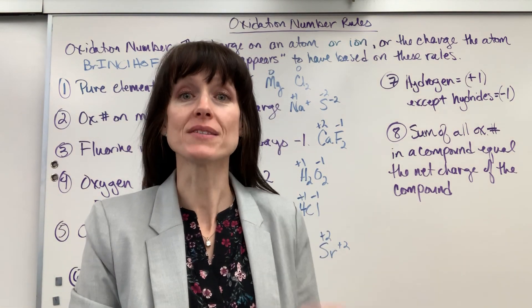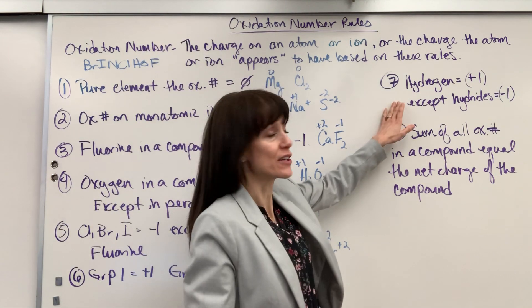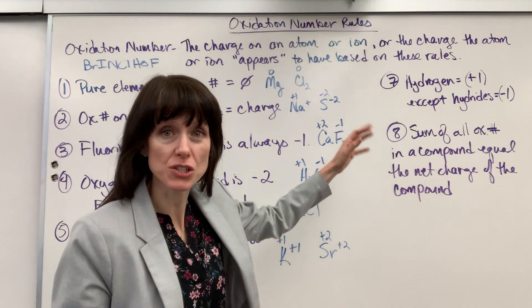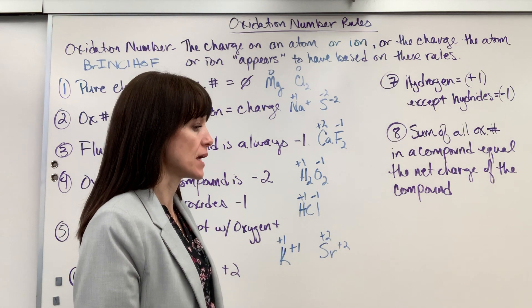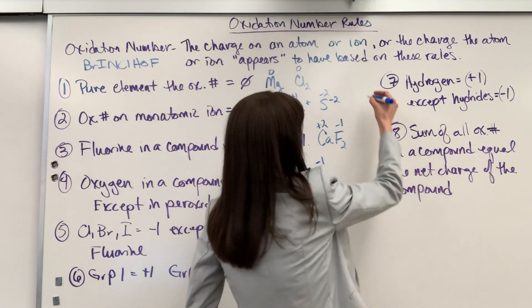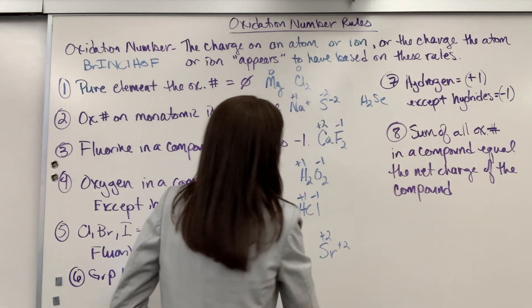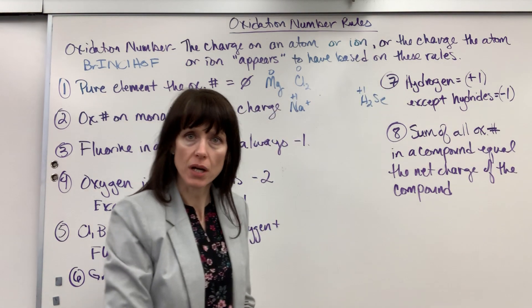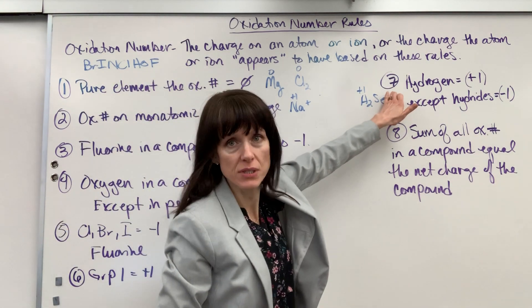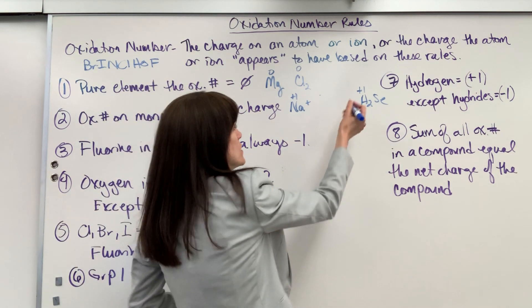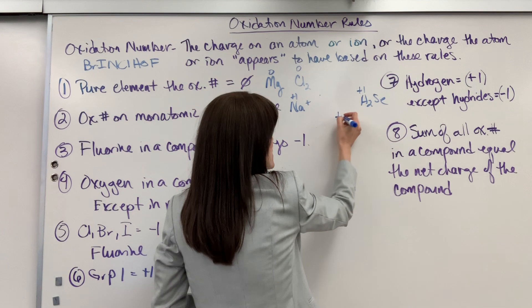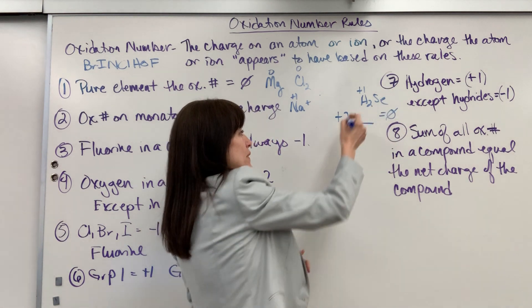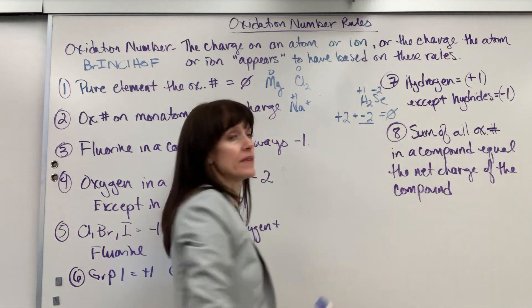Rule seven: hydrogen is always a plus one, except in hydrides. A hydride is when you have hydrogen bonded to a metal. For example, hydroselenic acid (H2Se): hydrogen is always plus one charge, and the net charge is zero. So plus one times two is plus two; the oxidation number for selenium must equal minus two to make the sum zero. And that is correct.